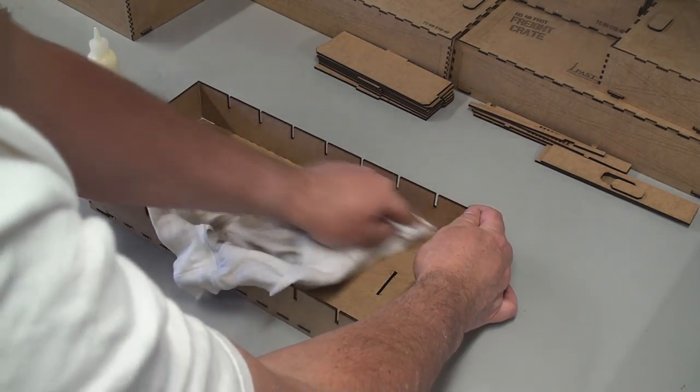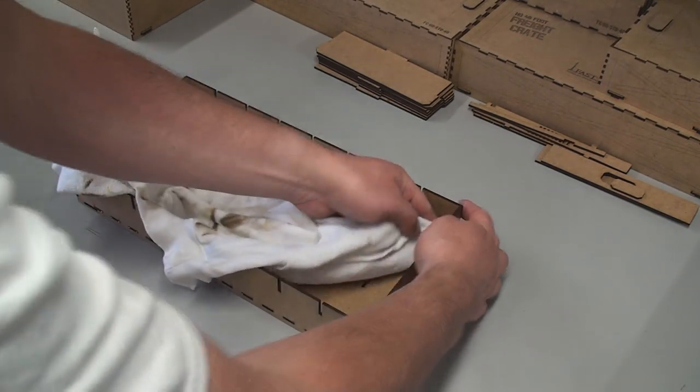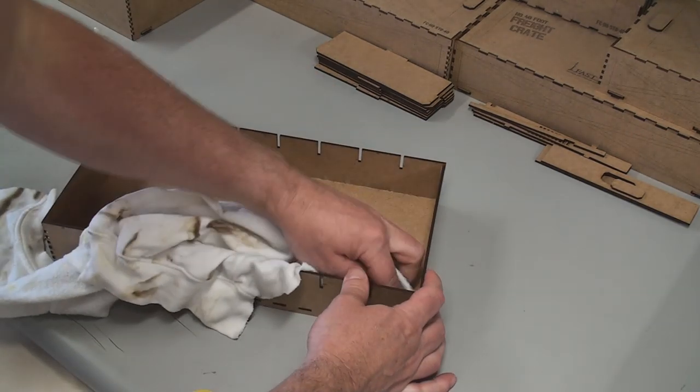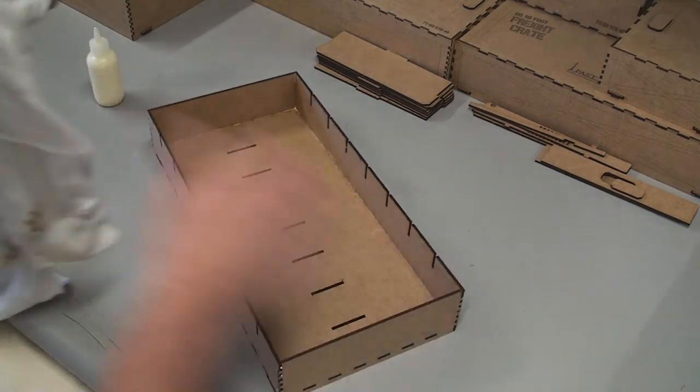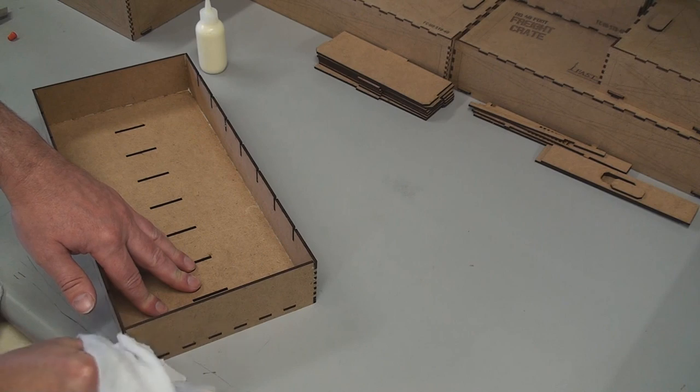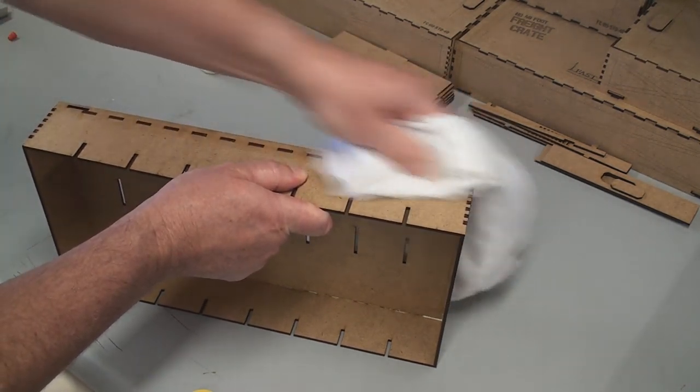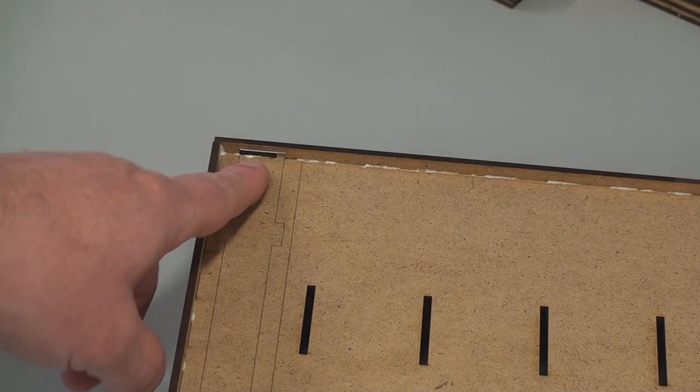And on the inside, I like to clean it a little bit more carefully because you will see that. Although this glue does pretty much go invisible when it dries. In here, we've got a little bit of glue in there. We need to clean that out.